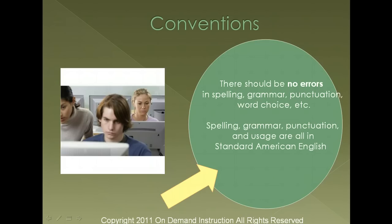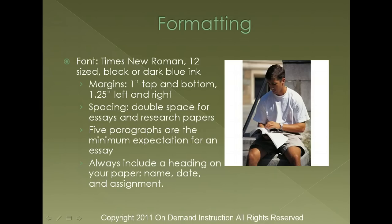In conventions, there should be no errors in your writing. You should correct all of these before submitting any piece of work. Make sure that you're always using standard American English to get the most points. In formatting, your font is typically Times New Roman, size 12, black or blue. Your margins are one inch top and bottom, one and a quarter on left and right. Your spacing is double spacing for essays and research papers. Five paragraphs are typically the expected minimum for an essay. And always be sure to include a heading on your paper — name, date, and assignment are just three things you should include.